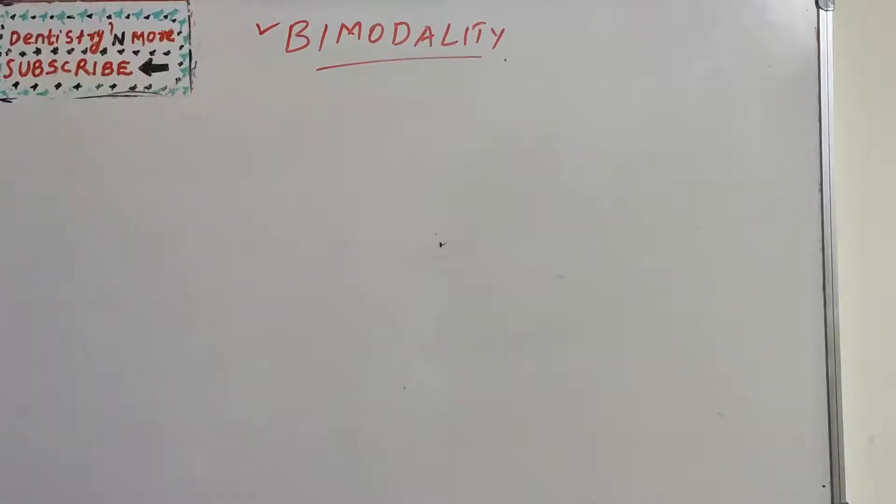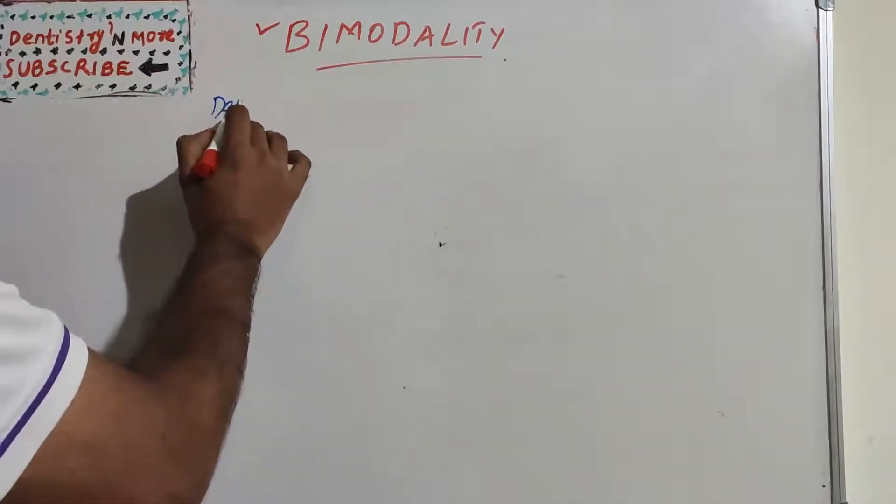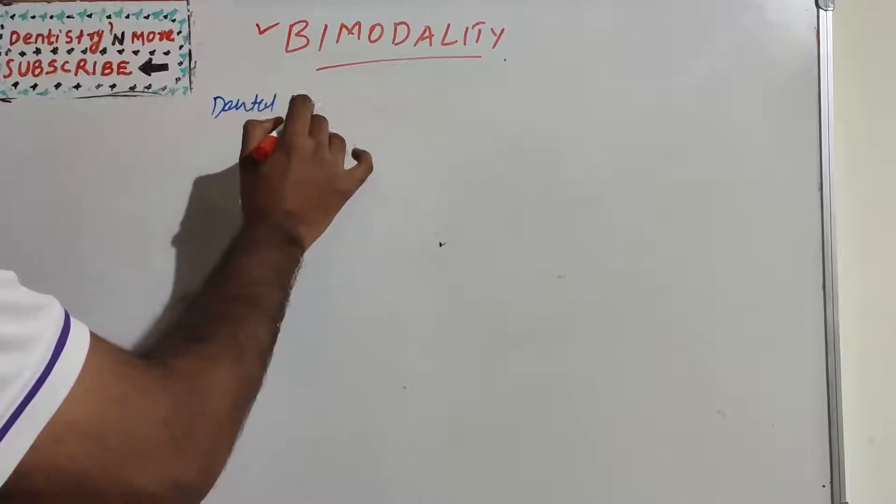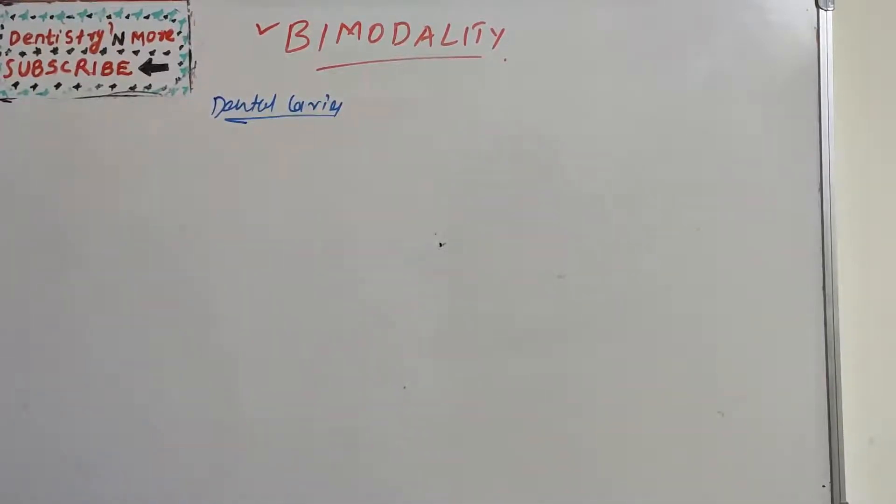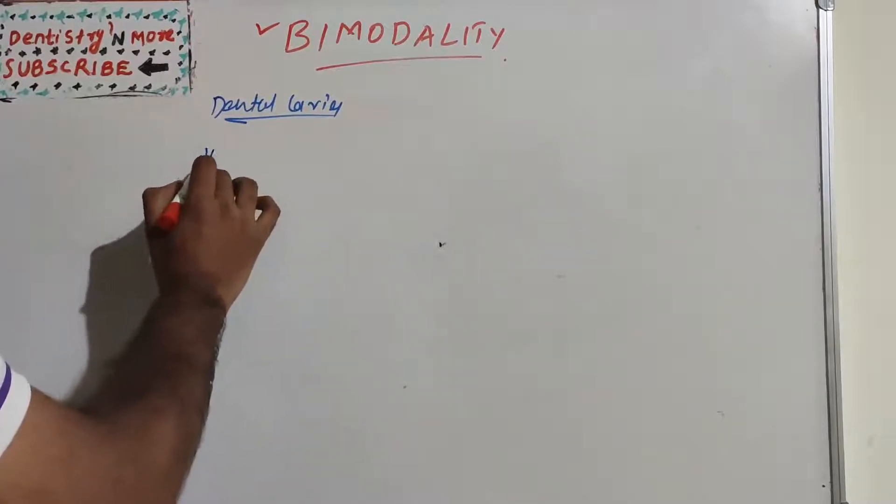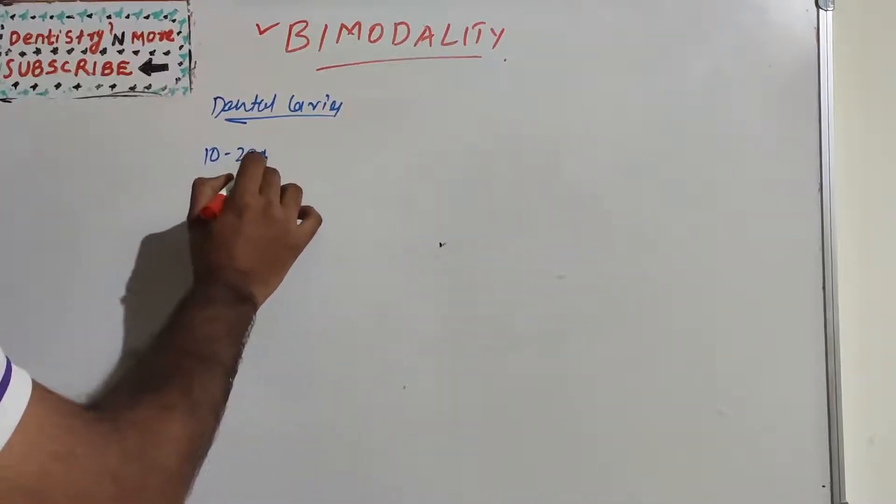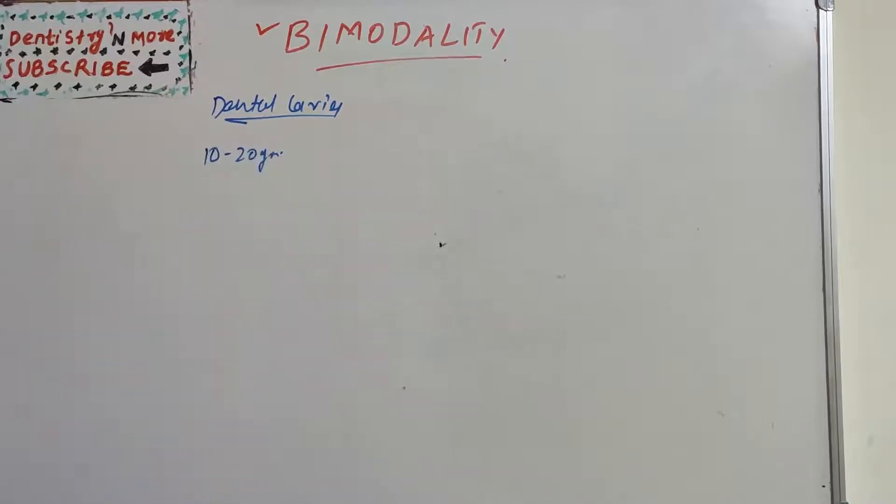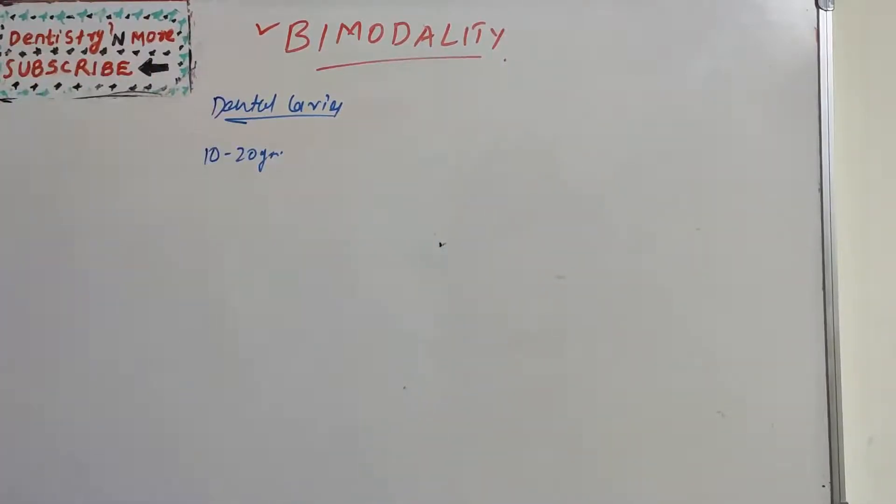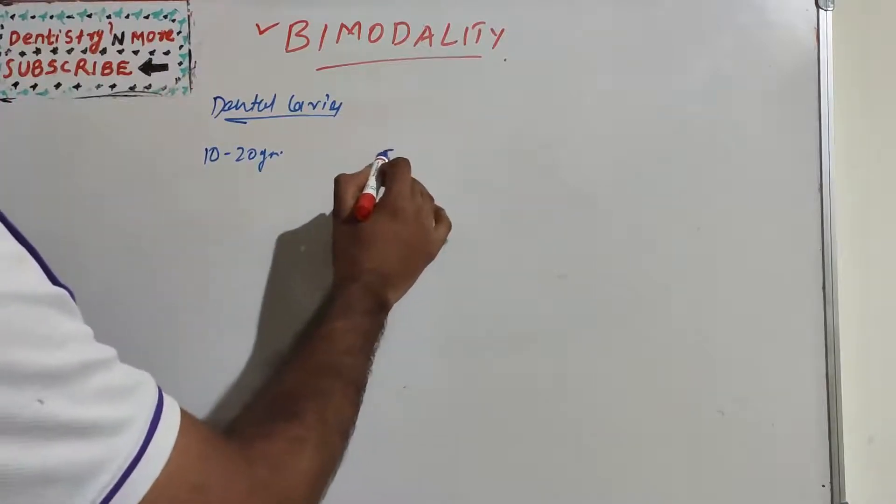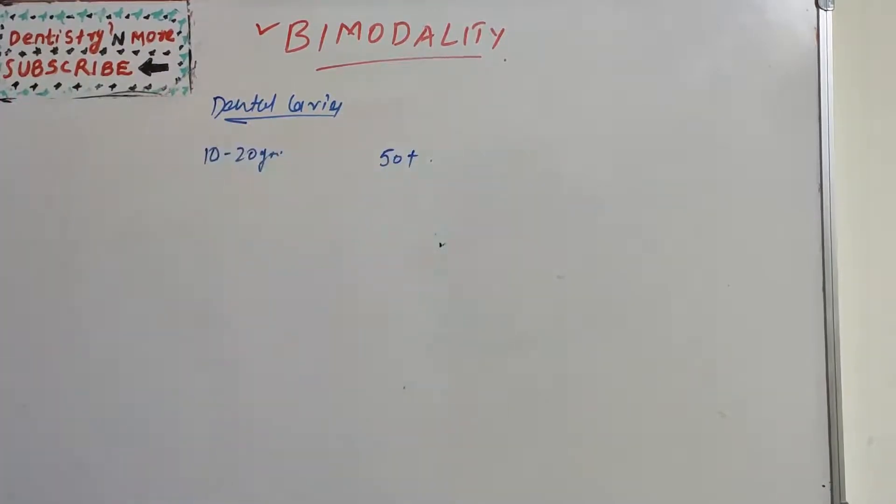Let's take an example of dental caries. Dental caries is most commonly seen in two age groups: in teenage, you can take 10 to 20 years, and very old age group. They are more prone to root caries, so 50 plus age group.